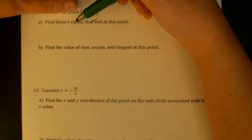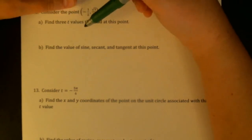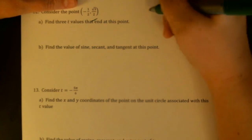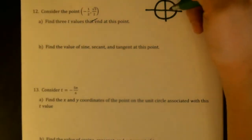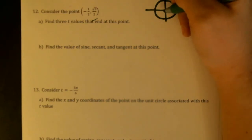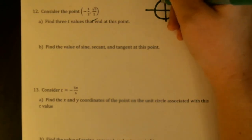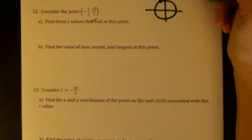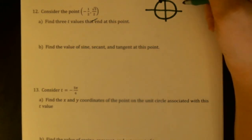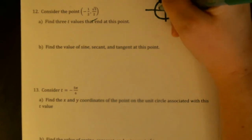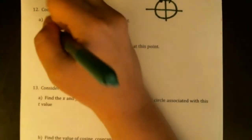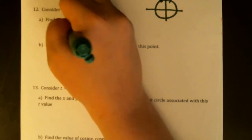The first part of this question is to identify three different arc lengths, t-values, that would end at this point. So this point is negative one-half, root three over two, so it's in quadrant two. The y-coordinate is a little bigger than the x-coordinate, so we're going to be a little closer to the y-axis. It's this one, and if you're getting a good feel for your unit circle, you should be able to spot that that's two pi over three. So here's pi over three, two pi over three — two pi over three is one possibility.